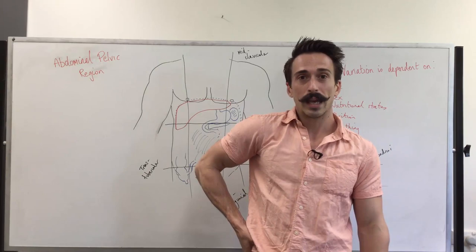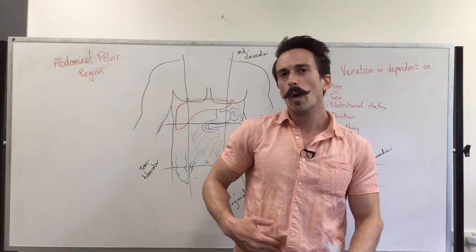You can do McBurney's point, but there's even variations there. Take the superior anterior iliac crest and go two-thirds up towards your belly button, and that's predominantly on the right-hand side where your appendix is.